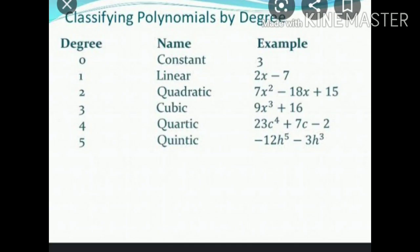Now we are going to study types of polynomial based on degree. If degree is 0, it's known as a constant polynomial. If degree is 1, it's known as a linear polynomial. If degree is 2, it's known as a quadratic polynomial. If degree is 3, it's known as a cubic polynomial.